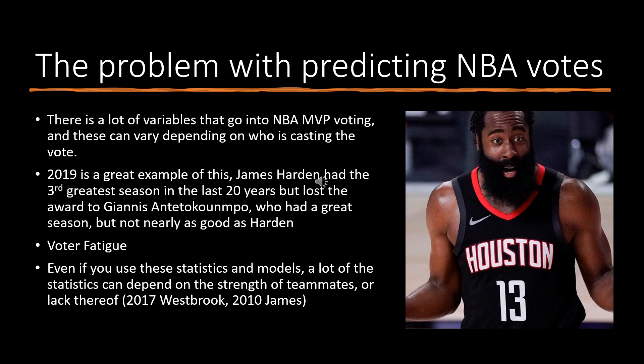Even using these statistics and models, a lot of the numbers can depend on the strength of teammates or lack thereof. In 2017, Westbrook had some of the worst teammates possible. His team still had an above-average season because he was excellent, but his statistics can get a little inflated because of this. We see the same thing with 2010 LeBron James's win shares — his team won a lot of games largely due to his success, and the win shares reflect that.